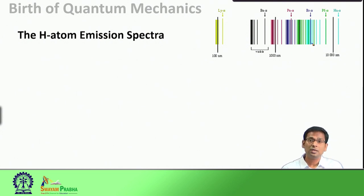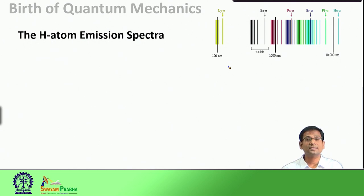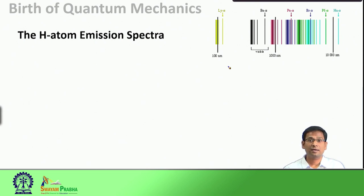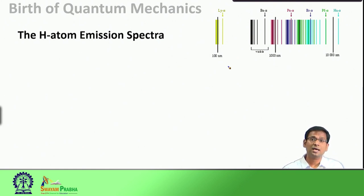All these observations could be explained together by a single equation - the Rydberg equation. However, these explanations lacked a fundamental understanding of the problem. They could reproduce the experimental observations as a merely numerical exercise, but we did not learn anything new about the system.